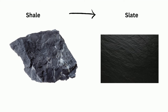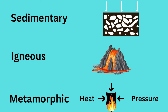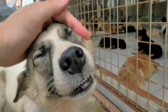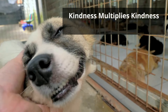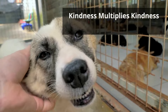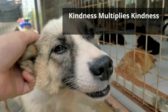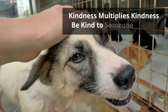So in summary, sedimentary rocks come from sediments, igneous rocks come from heat, and metamorphic rocks are born from heat and pressure. Thanks for watching, and remember, kindness multiplies kindness. Be kind to someone today.